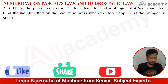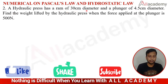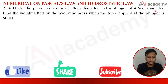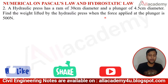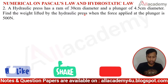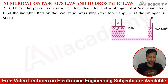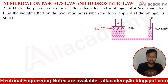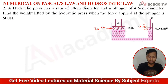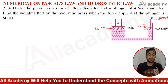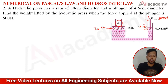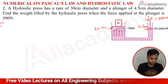The next problem: a hydraulic press has a ram of 30 cm diameter and a plunger of 4.5 cm diameter. Find the weight lifted by the hydraulic press when the force applied at the plunger is 500 N. The ram diameter is 30 cm, plunger diameter is 4.5 cm, and force = 500 N. We need to find how much weight is lifted.